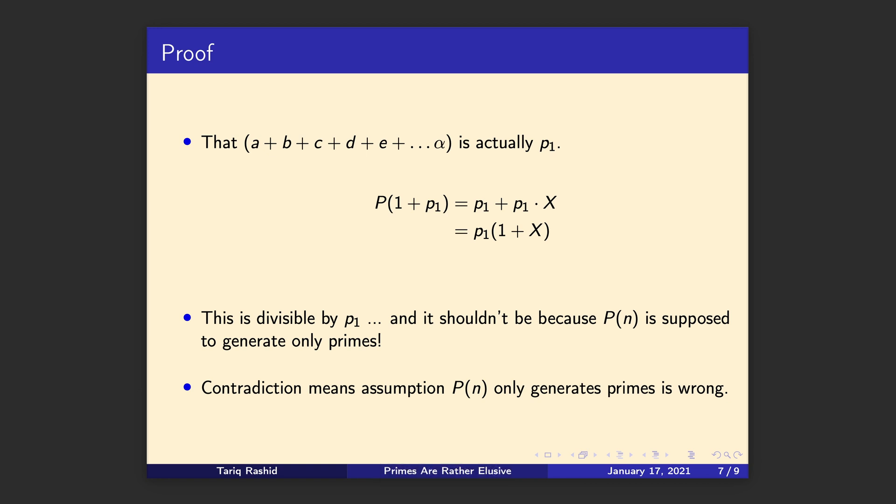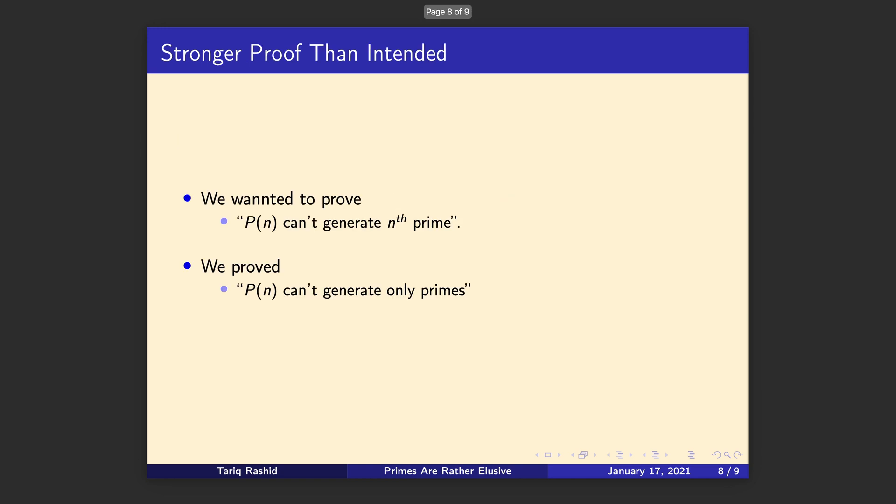We've just shown that if we did say that we had a polynomial that generates only primes, we can use it to generate something that isn't a prime. It's a contradiction. Therefore, our starting assumption is wrong. Proof by contradiction. Great.